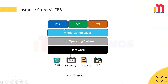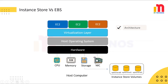Both Instance Store and EBS are volumes for EC2 instances, but they differ in many aspects, like the architecture. Instance Store volumes are physically attached to the host computer where the instance is running. They are considered ephemeral storage because they are tied to the life cycle of the instance.